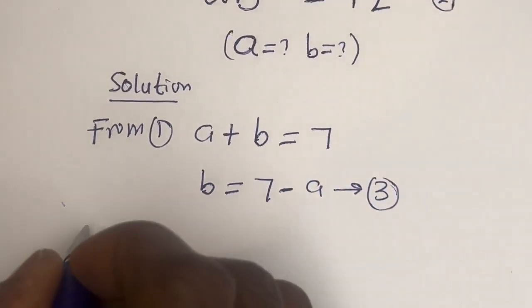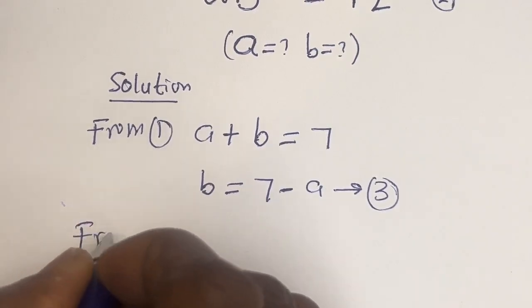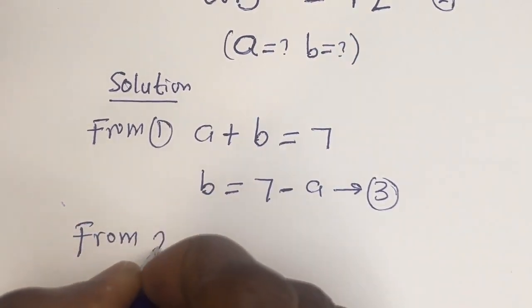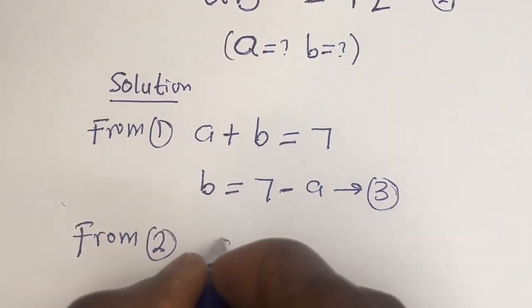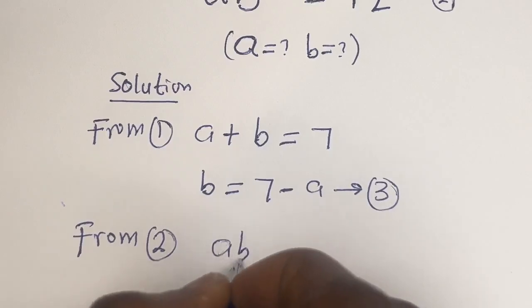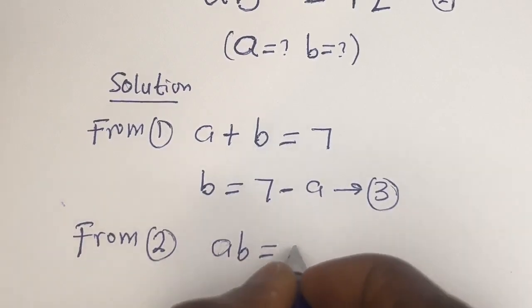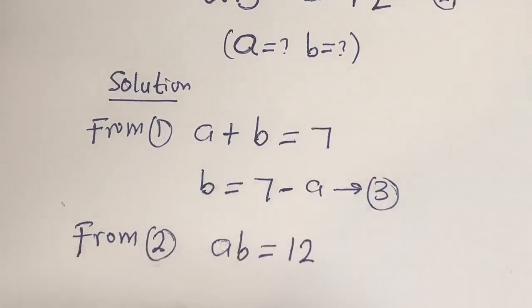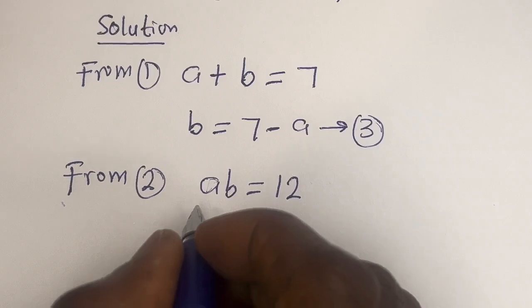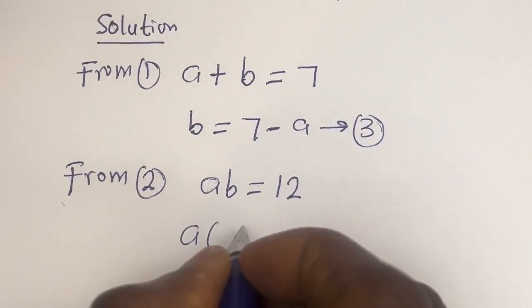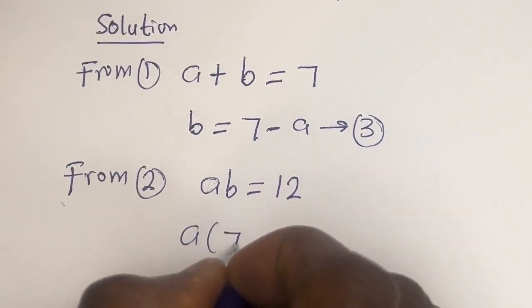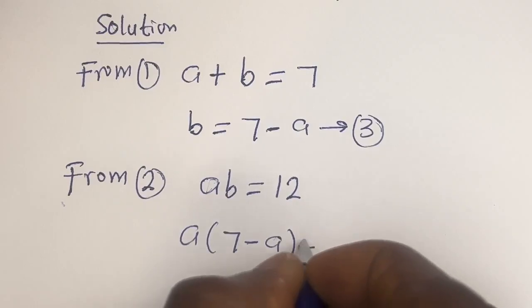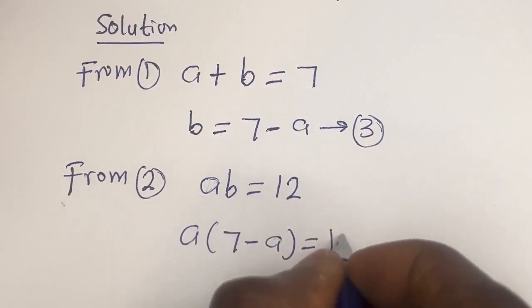From equation 2, ab is equal to 12. Let's substitute for b: a multiplied by bracket (7 minus a) is equal to 12.